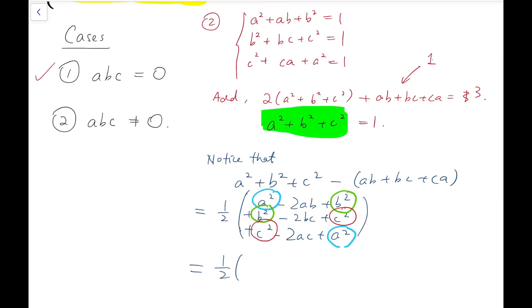Now from this we can say that it is equal to a half times (a - b)², (b - c)², (c - a)². And at first we know that it's actually 1 - 1, and so that's 0.